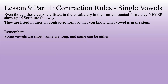Remember, some vowels are short, some are long, and some can be either. This is very important for how we form contractions. Alpha can be short or long. Epsilon is a short vowel that lengthens into an eta. Iota can be short or long. Omicron is a short vowel that lengthens into an omega. Upsilon can be either long or short. If you think of these as A-E-I-O-U, then every other one has a corresponding long form: eta is the long of epsilon, omega is the long of omicron.